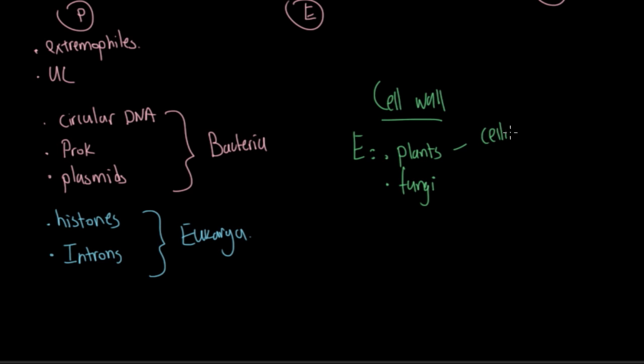Plants have cell walls made of cellulose. And fungi have cell walls made of chitin. Bacteria have cell walls. All bacteria cell walls are made of peptidoglycan.